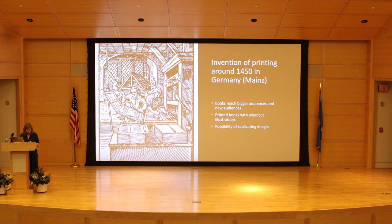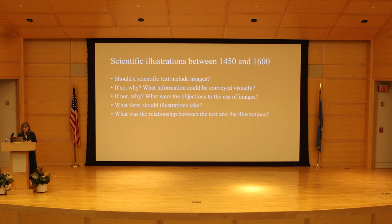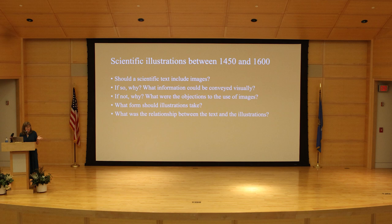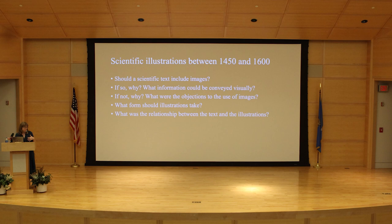In this period between about 1450 and 1600, there was considerable debate and discussion and experimentation with scientific illustrations. The first big question was: should a scientific text include images? There were a lot of arguments about why it should not, why it was better that texts did not include images. If you were going to include images, what information could you convey visually, and what form should those illustrations take? How would you answer the objections to the use of images? And finally, there was discussion about what the relationship between the text and the illustrations should be.